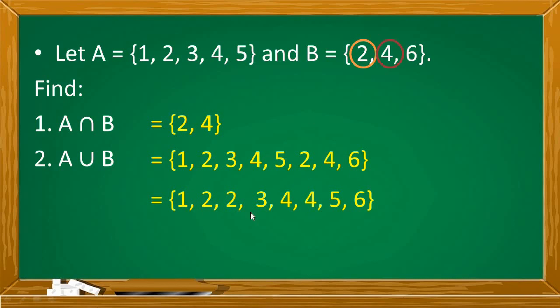Magiging A union B is equal to 1, 2, 3, 4, and 5. And yung elements ni B which are 2, 4, and 6. Pag inayos natin in ascending order, it is equal to 1, 2, 2, 3, 4, 4, 5, and 6. May mga naulit na elements, so this is wrong. The correct answer is A union B is equal to 1, 2, 3, 4, 5, and 6. Isang beses lang ang sasulat ang mga elements.